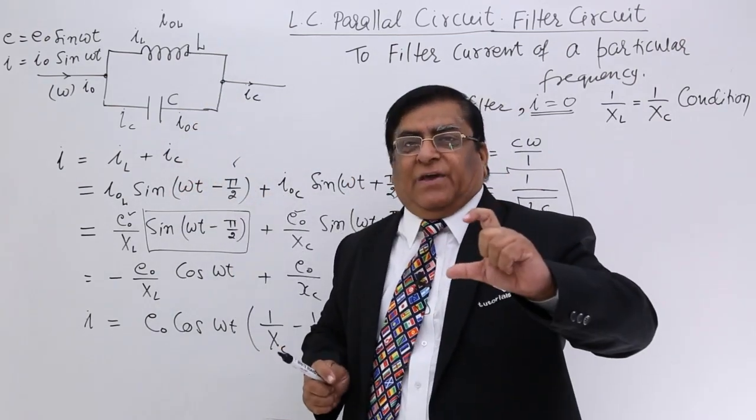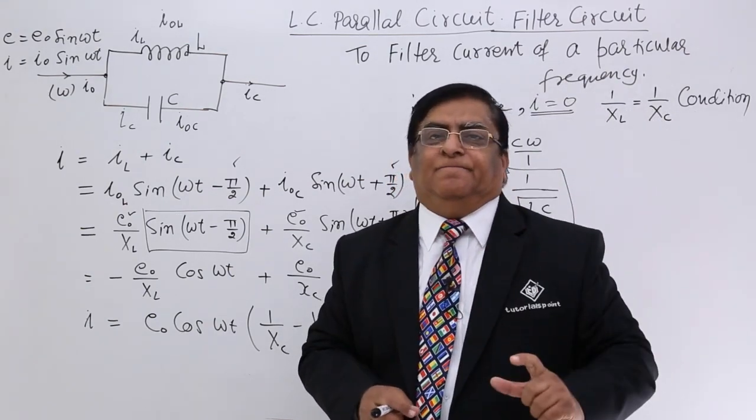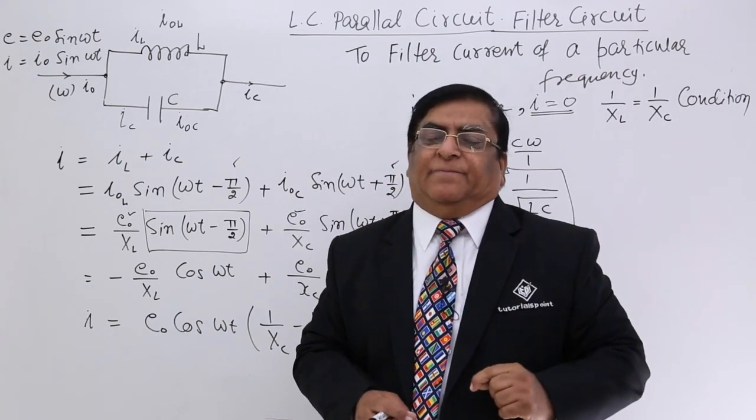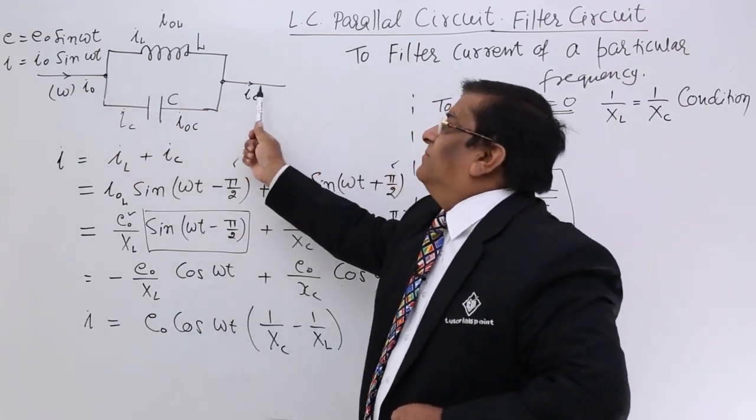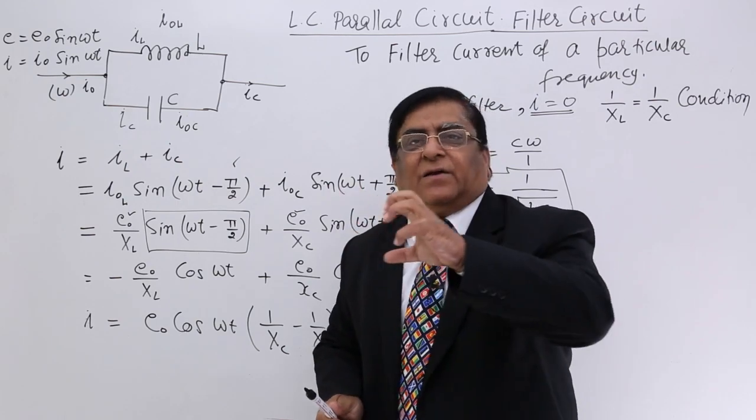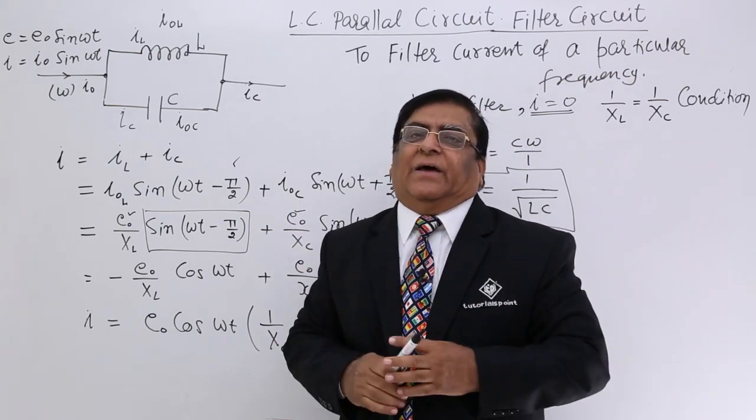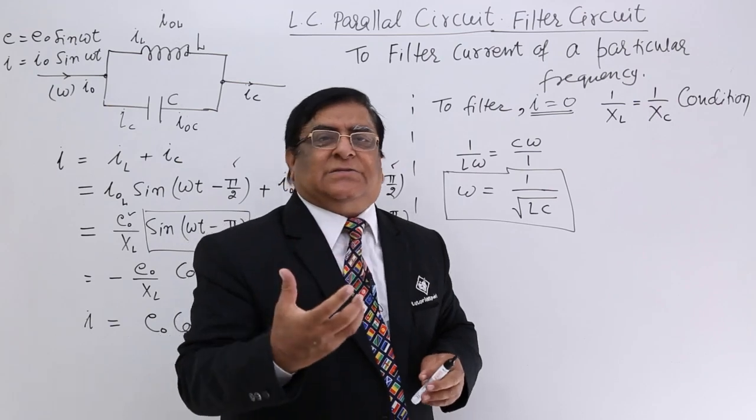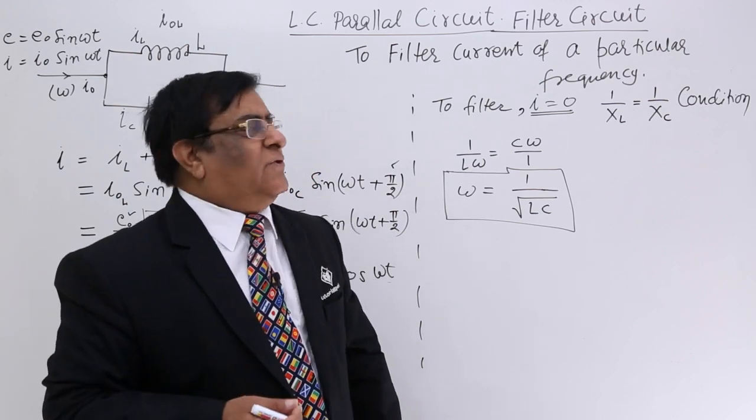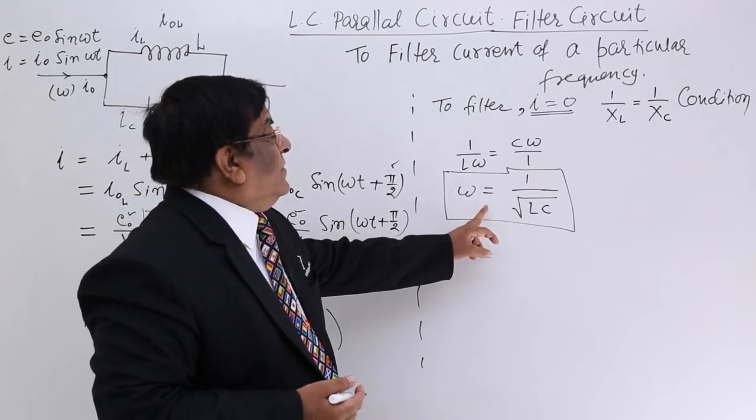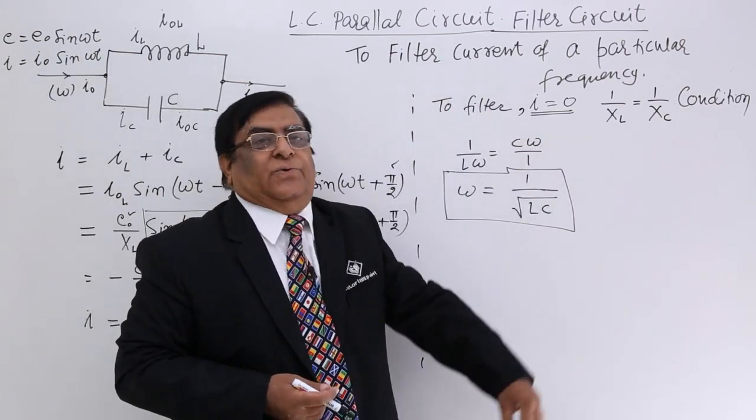We choose C and L in such a way that this comes to be 2π into 200. And 200 is the frequency of that person. Now what will happen? Then this particular current which is carrying singer's voice becomes zero. And rest all the currents are coming as it is. So you listen all the music minus sound of the singer. And then you use it for karaoke. This is technology of making karaoke. You can make it in your computer with a simple software.